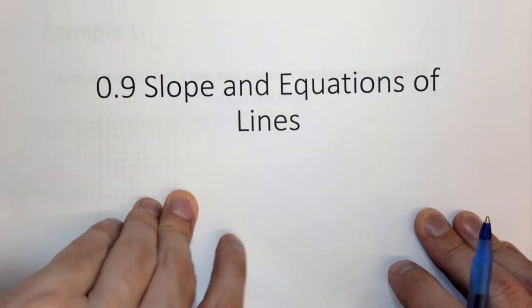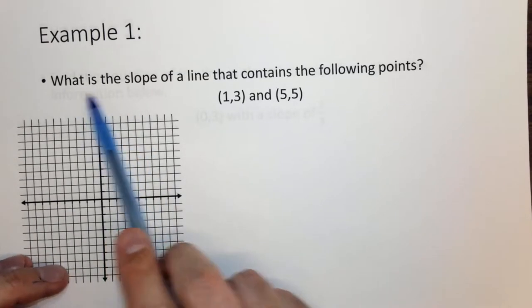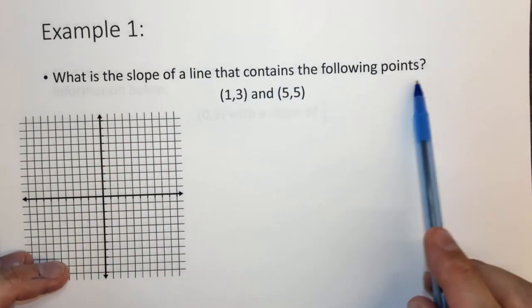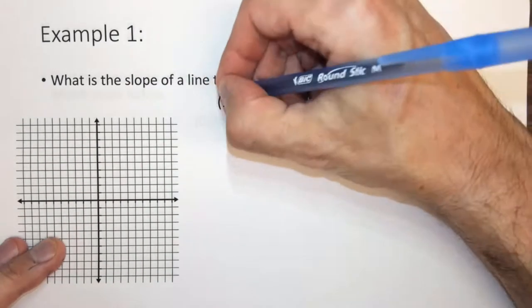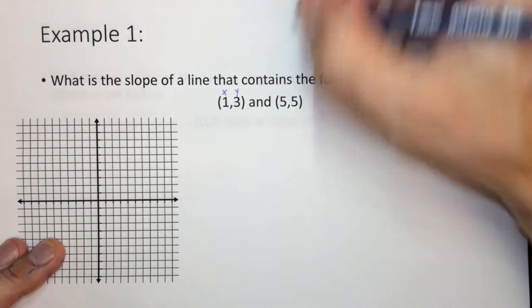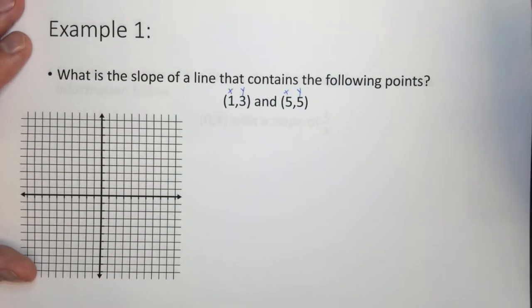Now in most of the examples that I'm going to do here, we're going to solve them mathematically, but I also want to actually graph the line so you can see that we can actually have the equation of a line. So it says what is the slope of a line that contains the following points? Well these points are xy-coordinates. This is x and this is y. By tradition, x comes first and then y.